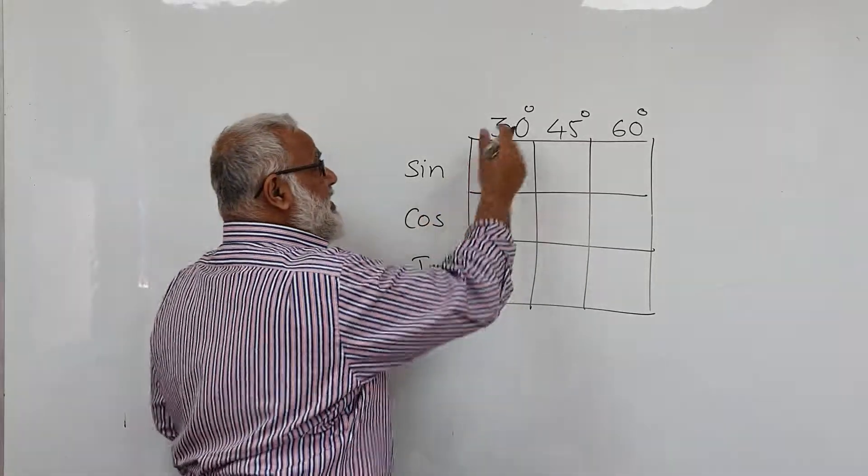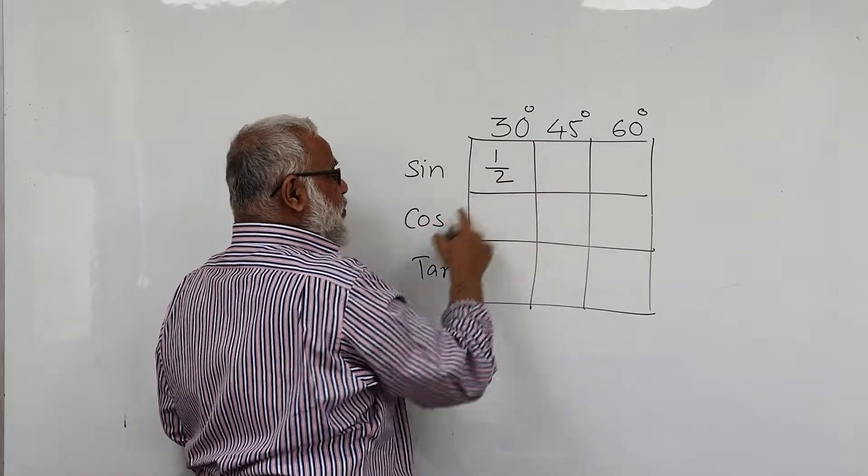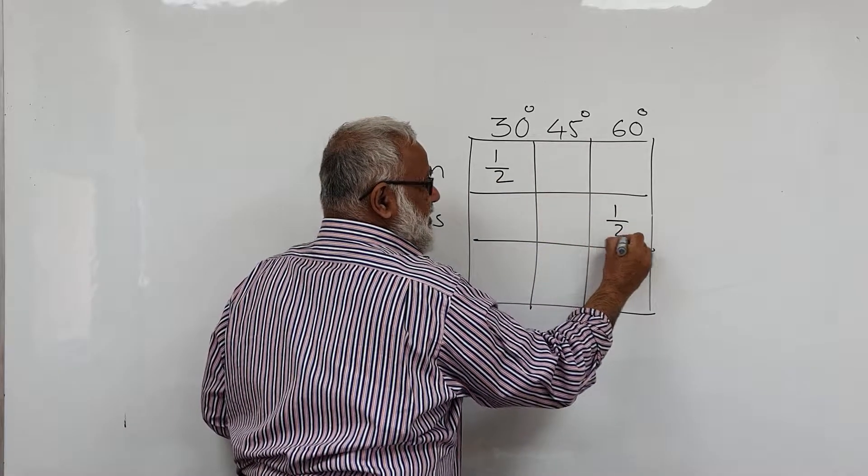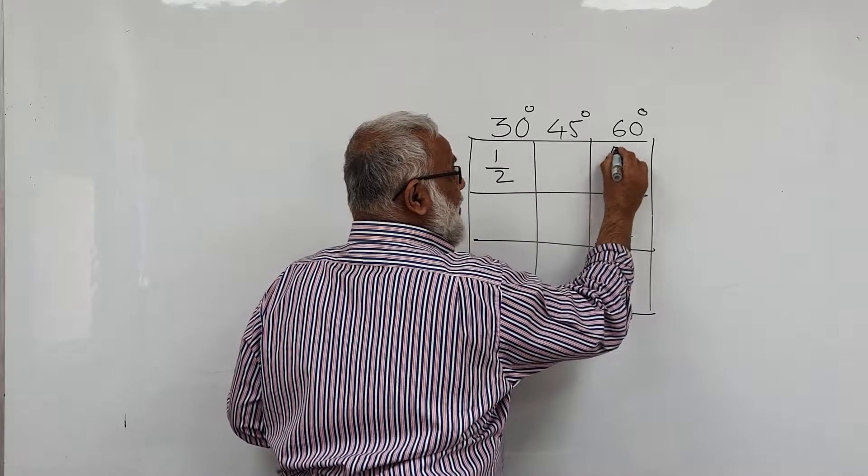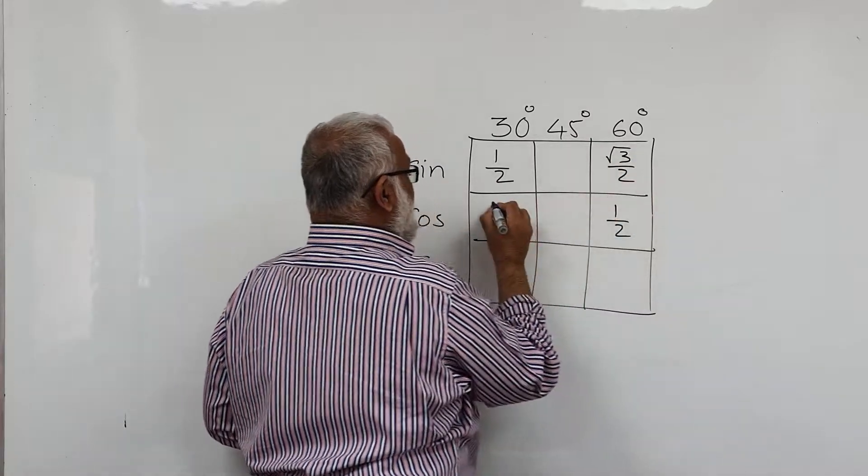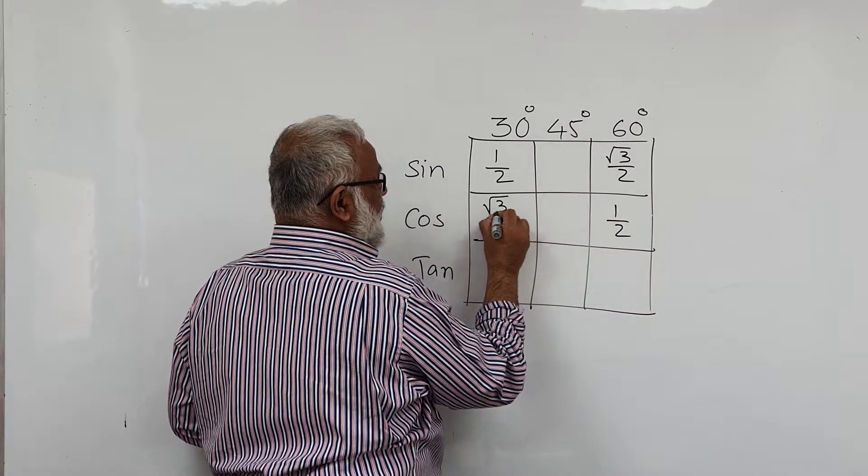Sine 30 is half, and so is cosine 60. In this way you can remember, sine 60 is root 3 over 2, and so is cosine 30, root 3 over 2.